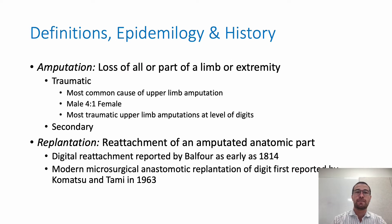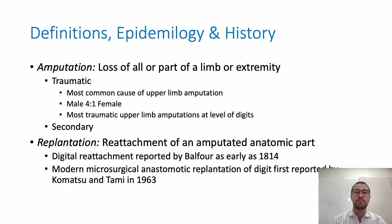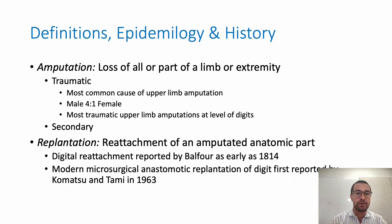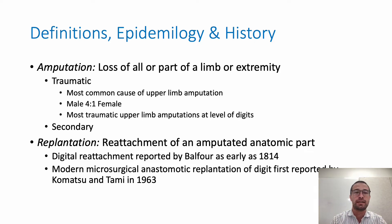Let's talk about some of the definitions, epidemiology and history to start with. For the purposes of today, an amputation is the loss of all or part of a limb or extremity. With regards to traumatic amputations, they're the most common cause of upper limb amputation, compared to lower limb where it's more often systemic processes. Male to female, four to one, so it's a much more common injury in males. And most traumatic upper limb amputations occur at the level of the digits. When we talk about secondary amputation in the literature, that refers to what we typically call terminalisation — a further procedure to debride and get a clean base of an amputated limb or digit.